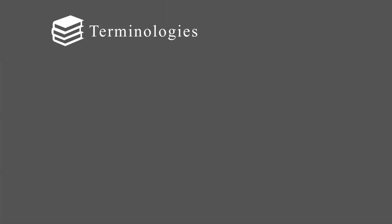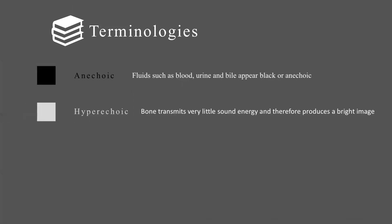Let's look at some terminology used with ultrasound. The first term is anechoic, which appears as a black structure on the image. This is seen when there is fluid such as blood, urine, or bile. The other term is hyperechoic, like bone, which transmits very little sound energy and produces a bright white image.